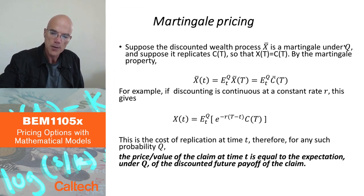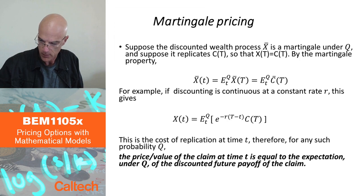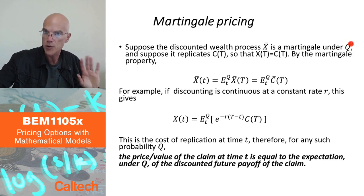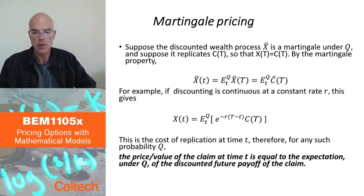Suppose you find a probability Q under which the discounted wealth process is a Martingale, and if the discounted stock prices are Martingale, then the discounted wealth process is also going to be a Martingale. Let's assume that we have a discounted wealth process that is a Martingale under some probability Q, which is not necessarily the actual probability, typically will not be.